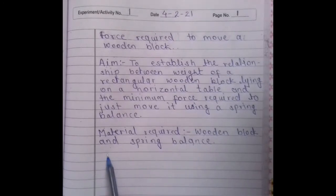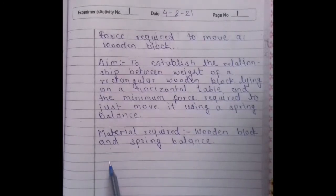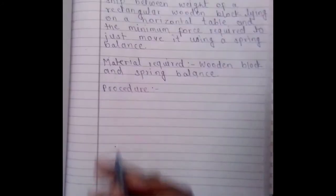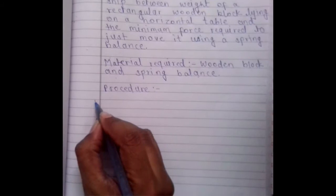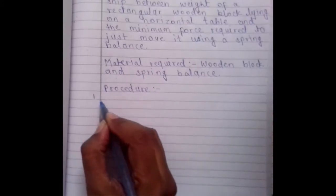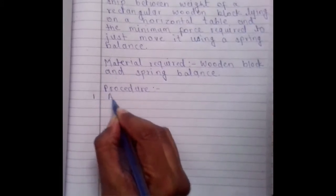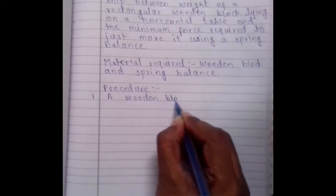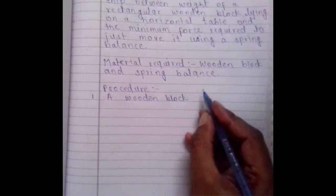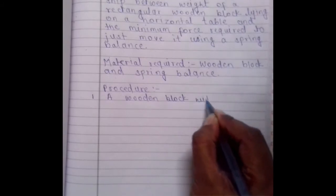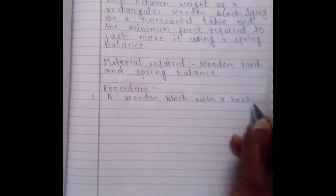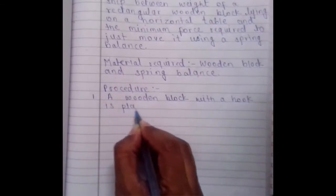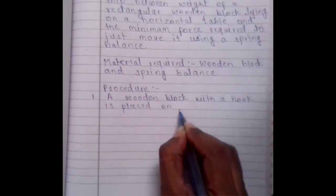Now, leave one line and write down the procedure. Procedure, point number one: A wooden block with a hook is placed on a table.